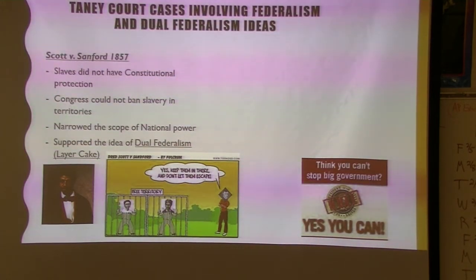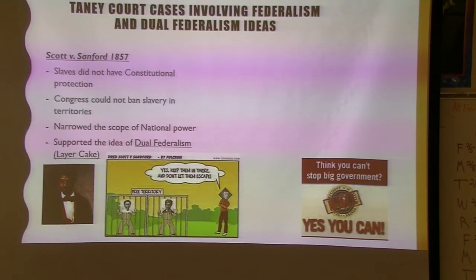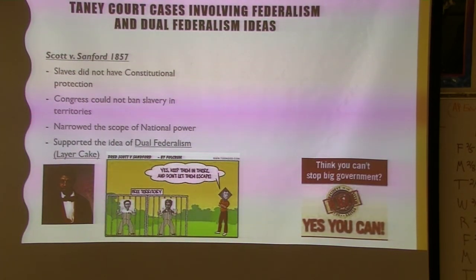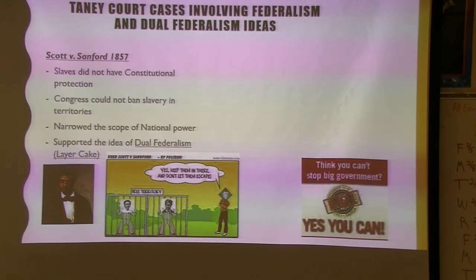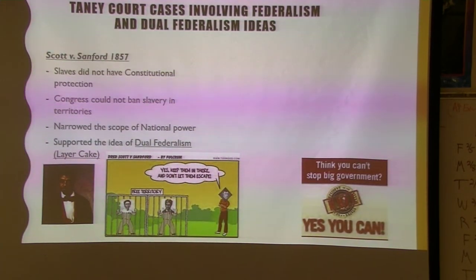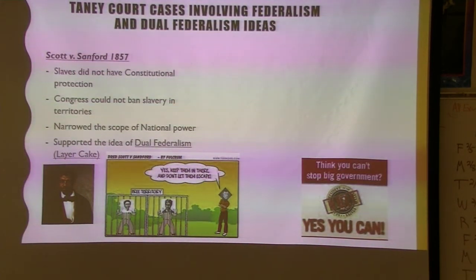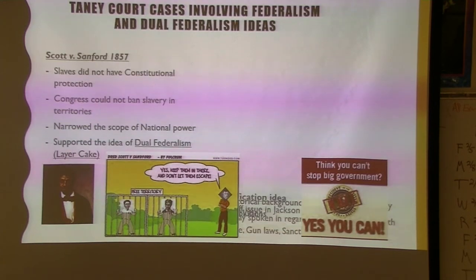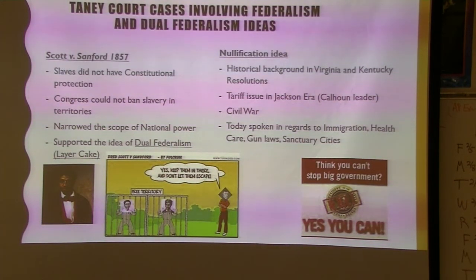The Dred Scott case is more for history, but it does play into federalism. Before the Civil War, there was the idea of dual sovereignty, where states and the federal government had different standards. When an enslaved person went into a free territory and free state and sued for his freedom, he was not allowed to sue, and the ruling pretty much said there was no legally meaningful distinction between free and slave territory — so national power was decreased because they couldn't ban slavery in the territories.